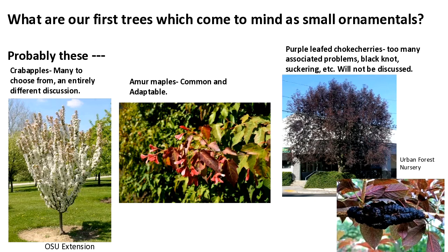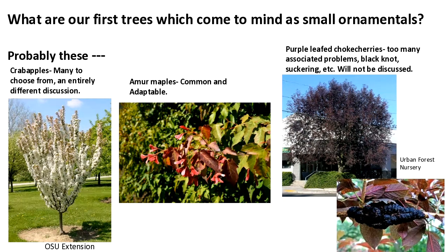When most people think of small ornamental trees, crab apples are probably one of the first ones that come to mind. Crab apples are very common throughout our area, very hardy, provide a spring bloom, and there are many to choose from. That's an entirely different discussion — I am not a crab apple specialist. There are many forms and features, and I'll mention where you can look those up, but we're not going to talk about those tonight.